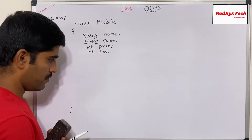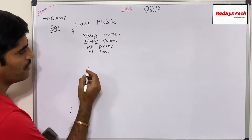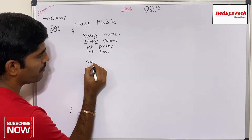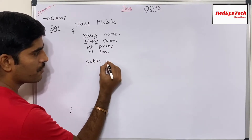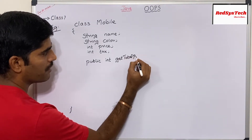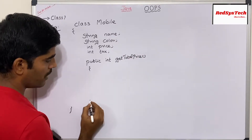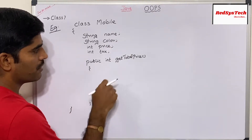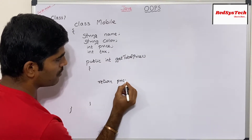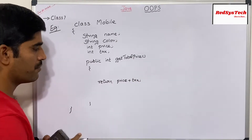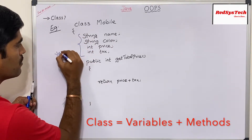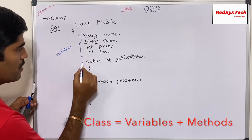Now I'm going to write a method for this class. Let's say I want to get the total price of this mobile phone. I write a method with return type int and method name getTotalPrice, enclosed within curly braces. This method returns price plus tax. So this is the structure of a class — we define variables and this is the method.